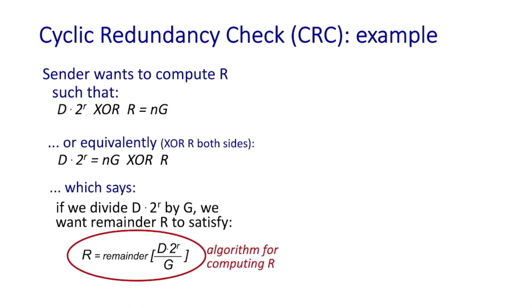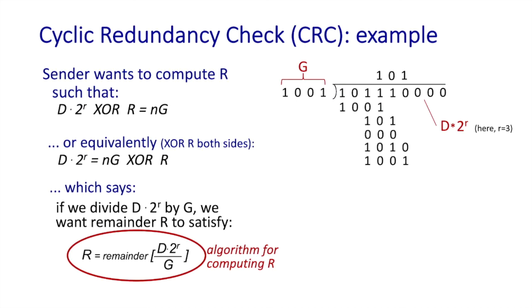Let's look at an example. This is just a toy example with a small 4-bit generator G here. Here's D, and here's D left shifted by 3. And now if we want to follow our algorithm over here, we divide this quantity here by G, and here's an animation of doing that division, and the result that we get, the remainder, is the value of r that would be sent. That's all there is to it, although in practice, again, the standard generators are a lot longer than 4 bits.